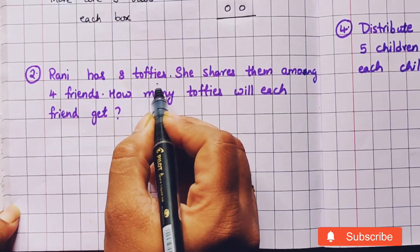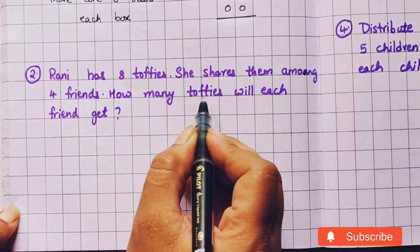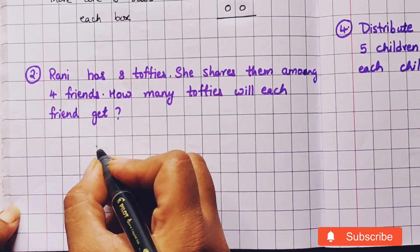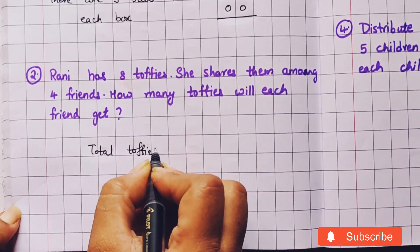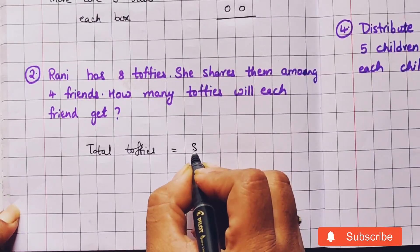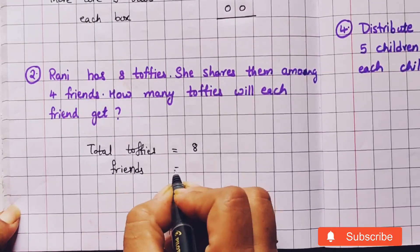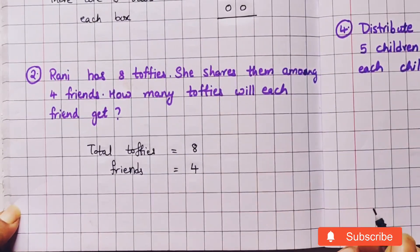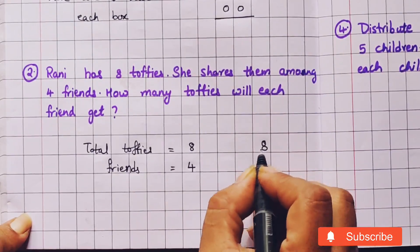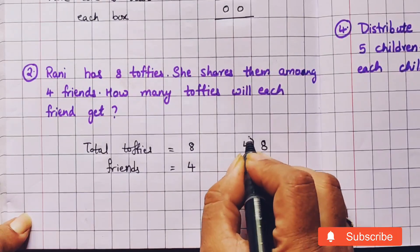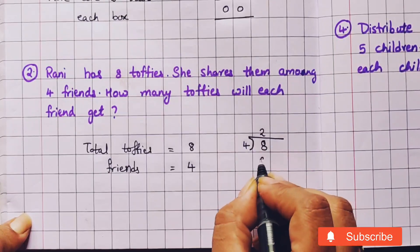Now let's do the next problem. Rani has 8 toffees. She shares them among 4 friends. How many toffees will each friend get? So, total number of toffees are 8 and total number of friends are 4. 8 toffees are going to get divided among 4 friends. 4 ones are 4, 4 twos are 8.